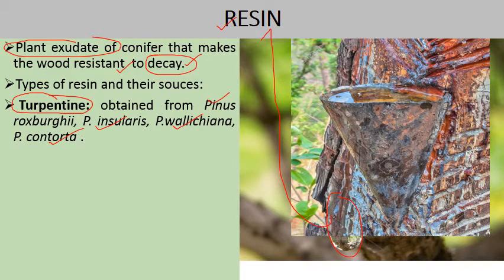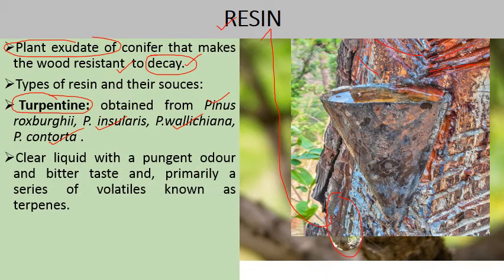Resin is collected by making incisions on the stem, and it can be collected using a metallic bowl or plastic containers. This resin is collected and processed in factories to make various varnishes, paints, and other materials. It is a clear liquid with a pungent odor and bitter taste, and is primarily a series of volatile non-terpenes.